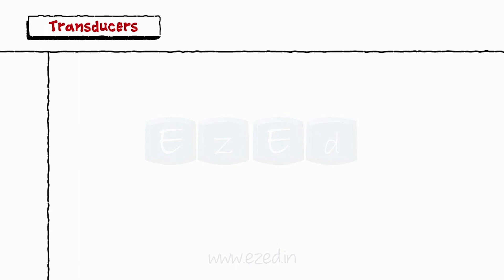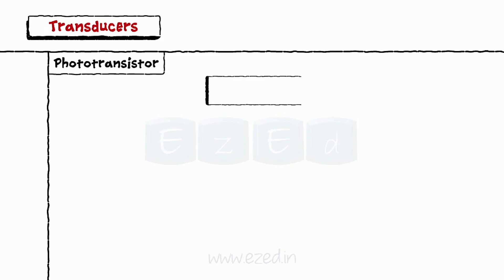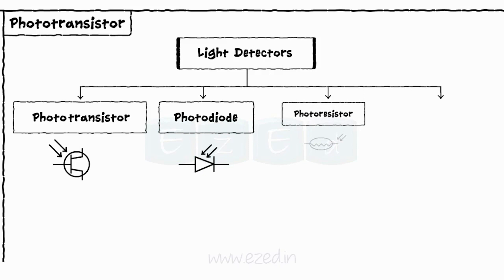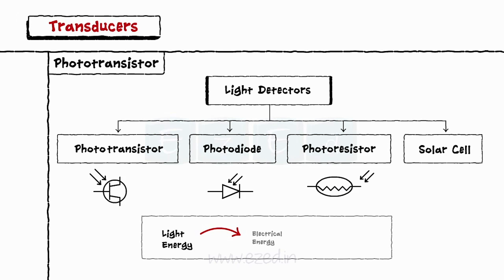Next we will study about phototransistor. Phototransistor belongs to a family of light detector devices such as photodiodes, photoresistors, solar cells, etc., which convert light energy into electrical energy as current or voltage as per their application.